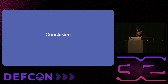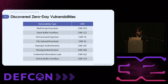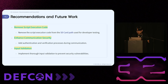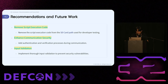Finally, let's move on to the conclusion. Across the nine analyzed dashcams, we discovered eight types of CWEs. Based on these findings, we have outlined our recommendations and future work. First, remove script execution code from the SD card path used for developer testing. Second, enhance communication security by adding authentication and verification processes during communication. Third, implement input validation — specifically, allowlist-based validation for special characters and length values — to prevent security vulnerabilities.